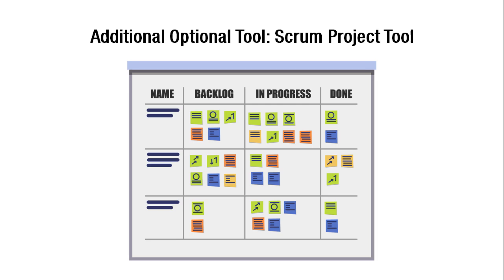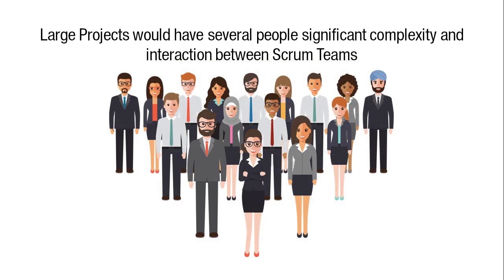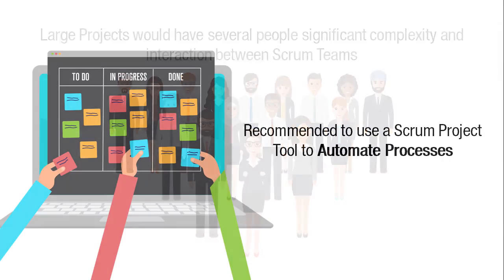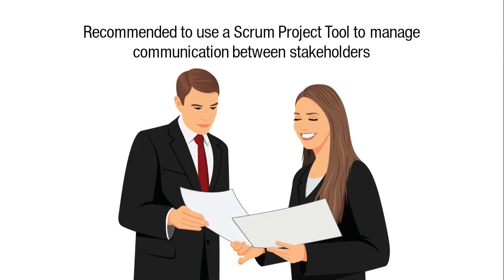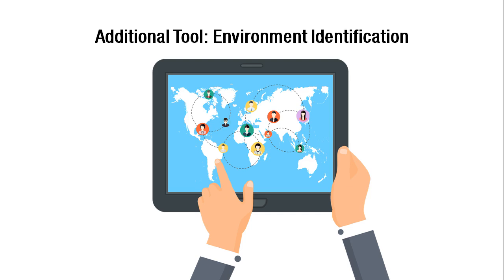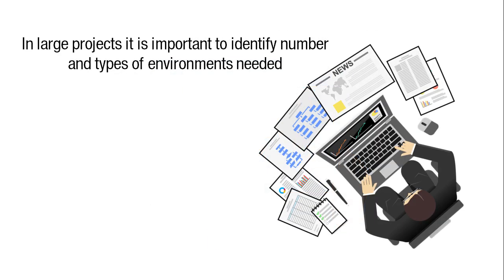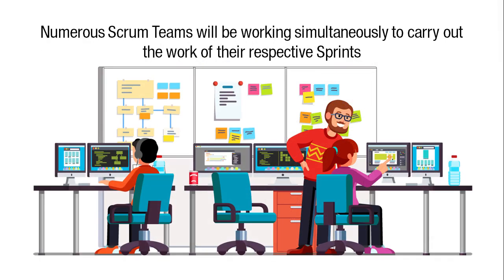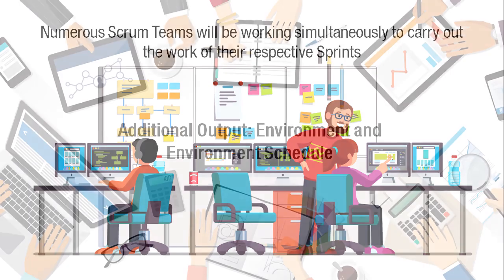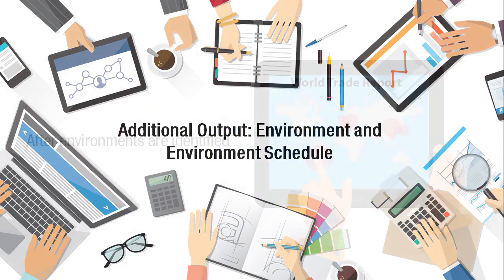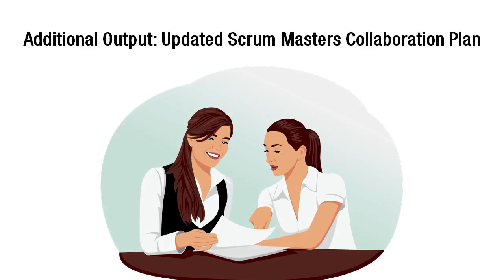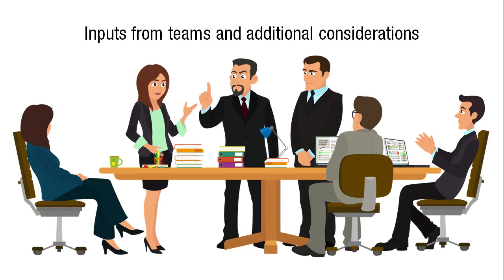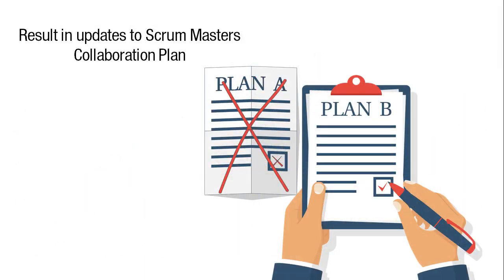An additional optional tool is the Scrum project tool. Since large projects would have several people, significant complexity, and interaction between Scrum teams, it is recommended to use a Scrum project tool to automate processes, manage complexity, generate reports, and manage communication between stakeholders. An additional tool is environment identification — in large projects, it is important to identify the number and types of environments needed, because numerous Scrum teams will be working simultaneously to carry out the work of their respective sprints. Additional outputs include the environment and environmental schedule, which is used for coordination of sprint activities across teams, and the updated Scrum masters collaboration plan, as inputs from the teams and additional considerations will result in updates to this plan.